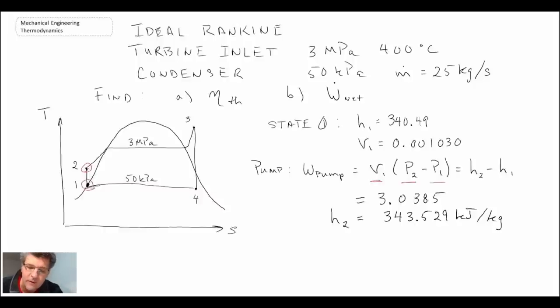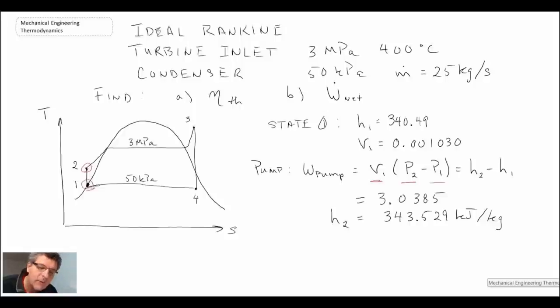We've figured out state one and state two. The next place we want to go is to state three. First, we determine if we're superheated. You go and look at 3 MPa and 400 degrees C - are you in a saturated region or superheated? For this case, it'll be superheated. You pull out the enthalpy h3 = 3230.9 and the entropy s3 = 6.9212 kJ/kg·K.